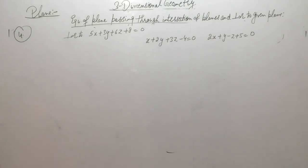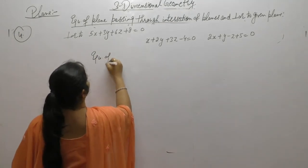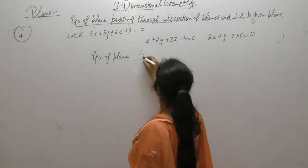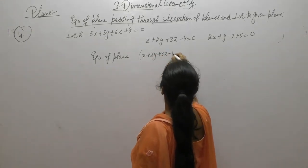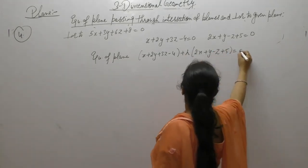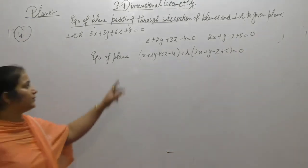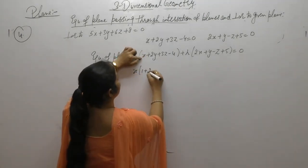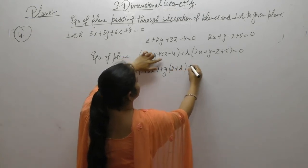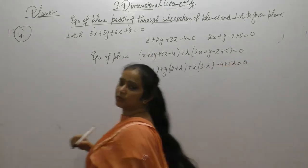The equation of the plane passing through the intersection of these two planes is x plus 2y plus 3z minus 4 plus lambda times (2x plus 5y minus z plus 5) equals 0. Expanding, this gives x(1 plus 2lambda) plus y(2 plus lambda) plus z(3 minus lambda) minus 4 plus 5lambda equals 0.